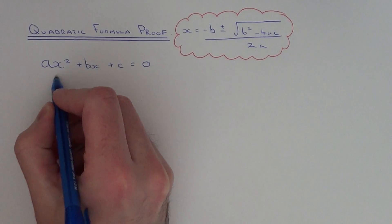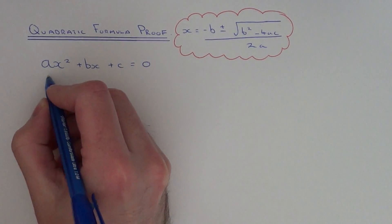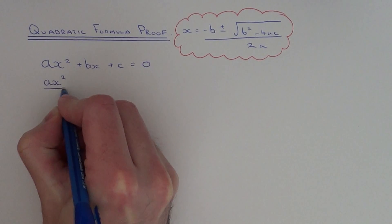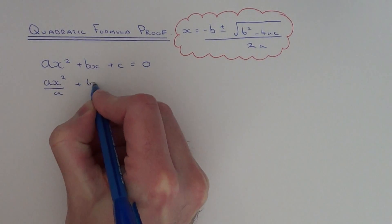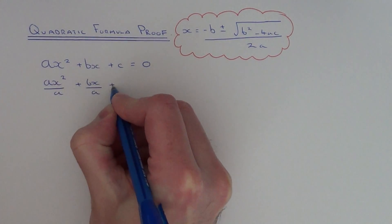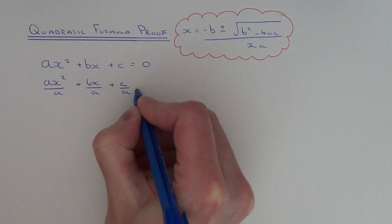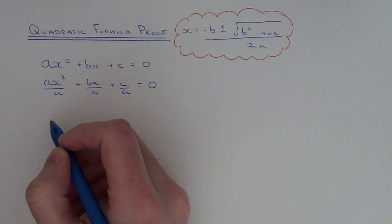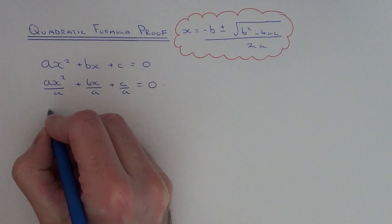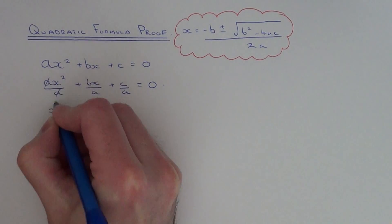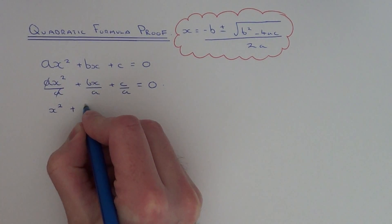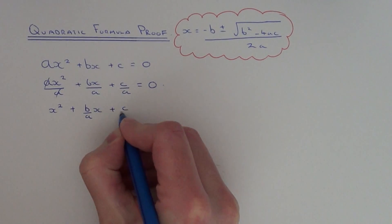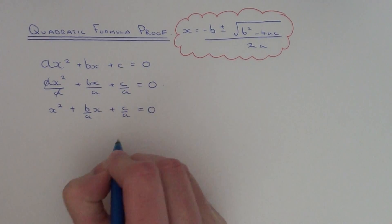First, we're going to divide this quadratic equation by a, so we've got ax squared over a plus bx over a plus c over a equals zero. If we simplify this, we get x squared plus b over a times x plus c over a equals zero.